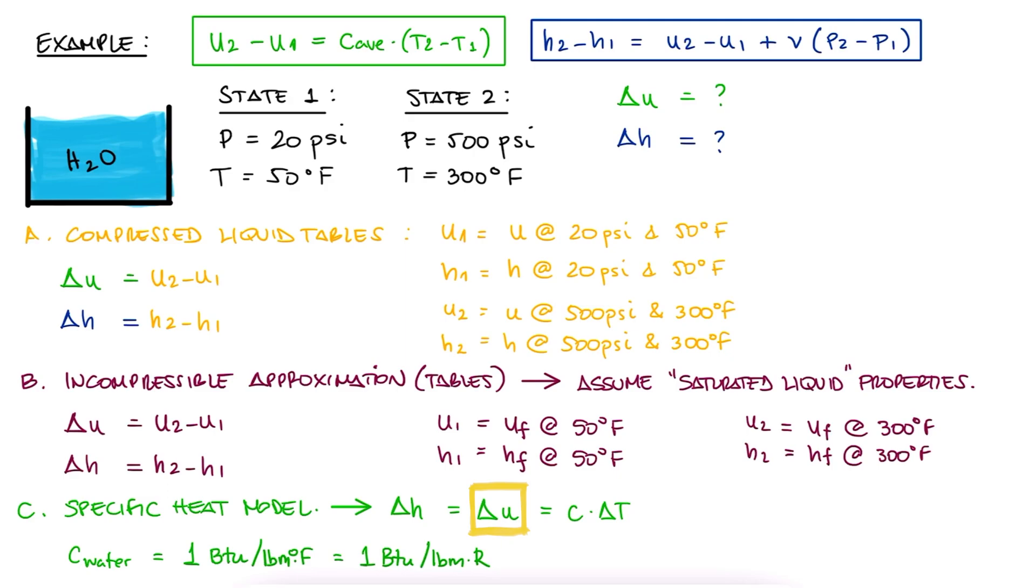Therefore, the change in specific internal energy, which is equal to the change in specific enthalpy, is equal to 1 times the change in temperature 300 minus 50, or 250 BTU per pound mass.